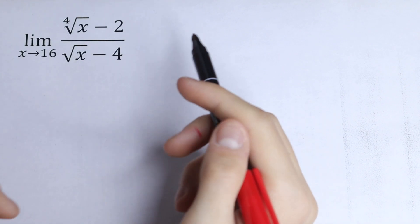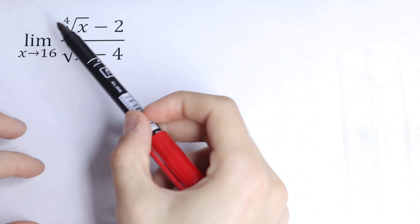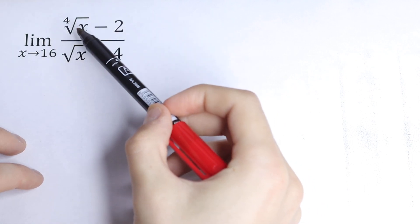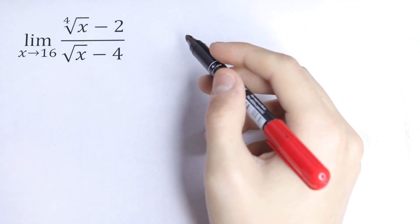Hello everyone, welcome back to Hymn Semantics. Here we have an interesting limit. What is the limit as x approaches 16 of the function 4th root of x minus 2 all over square root of x minus 4?